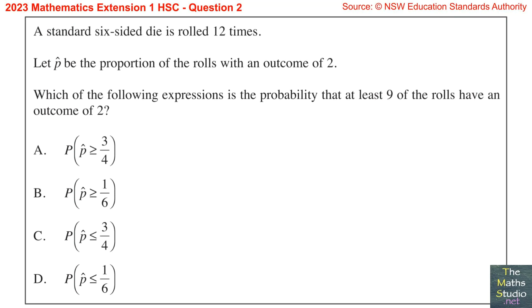Question 2. A standard 6 sided die is rolled 12 times. Let P hat be the proportion of the rolls with an outcome of 2. Which of the following expressions is the probability that at least 9 of the rolls have an outcome of 2?